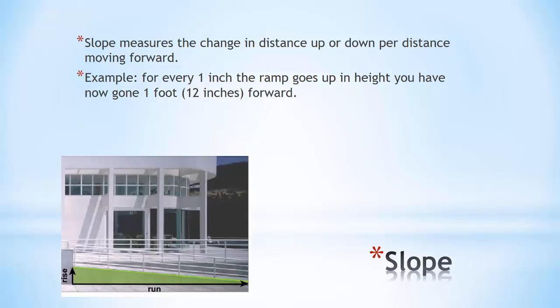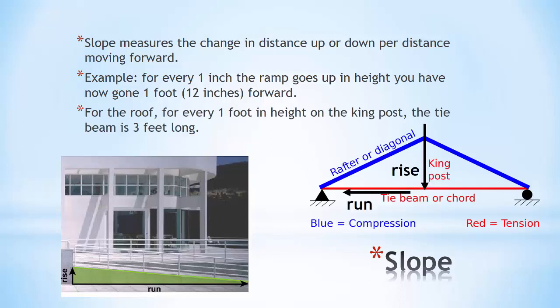Another example is on a roof. You've heard the pitch of the roof. In this example, what we're saying is that for every one foot in height of the king post, the tie beam is three feet long. So if we were to double the height of the king post, we'd be doubling the length of the tie beam.